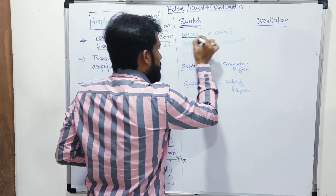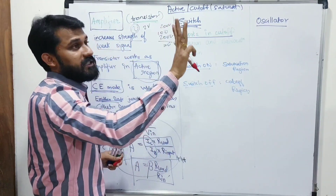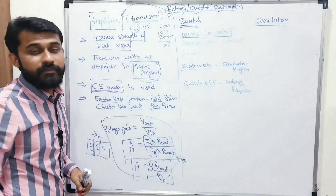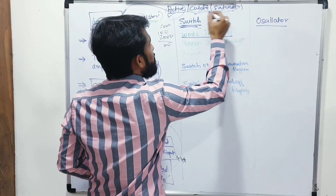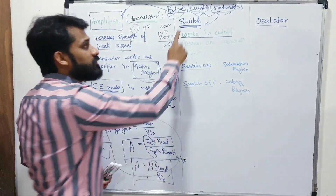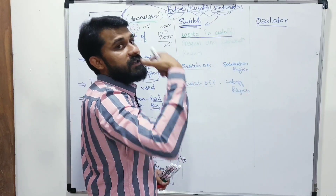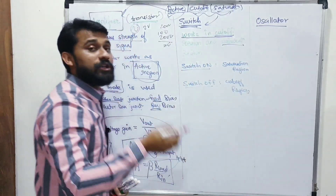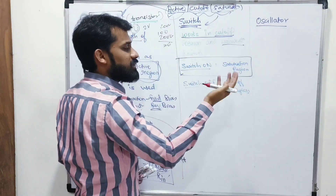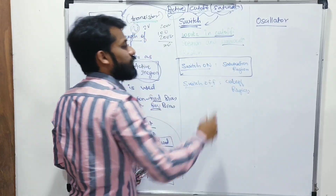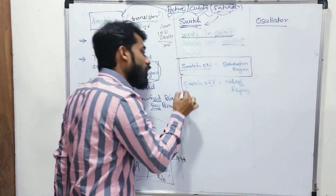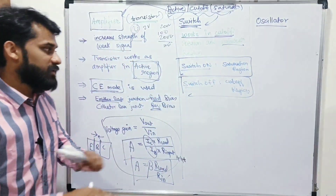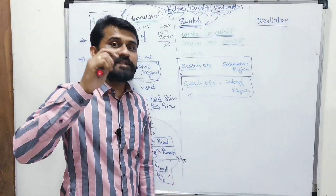Switch on means the transistor is in saturation region; switch off means the transistor is in cut-off region. Easy to remember: switch off = cut-off. In cut-off region, there is no input to the transistor, so no current flows and the circuit is effectively off — like an open switch. In saturation, the transistor is fully on — like a closed switch.